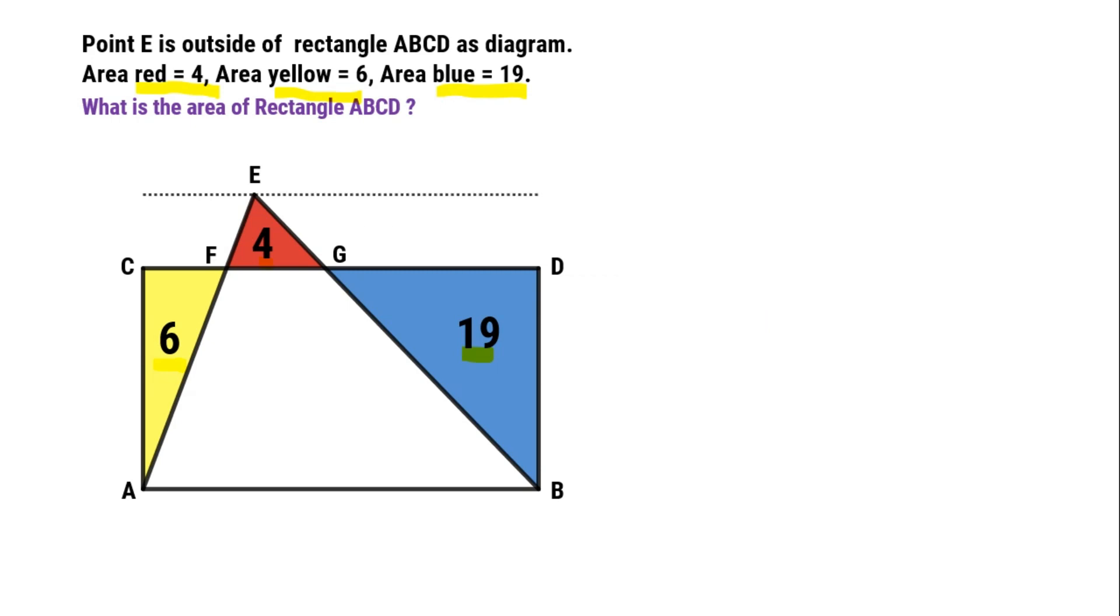Through point E, make a parallel segment to CD. Through point D, make a perpendicular segment DH to it. If we move point E closer to point H, we could guess the length of FG is constant.